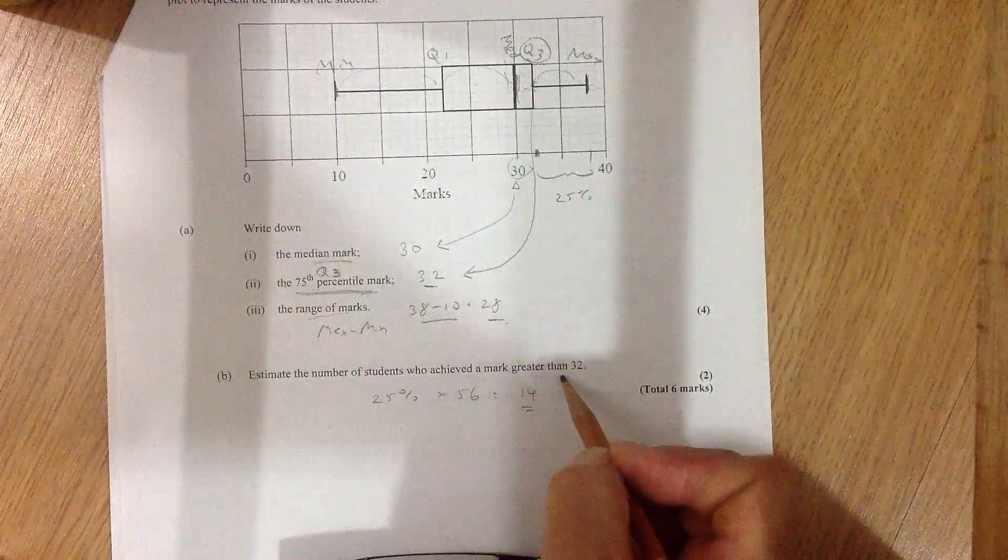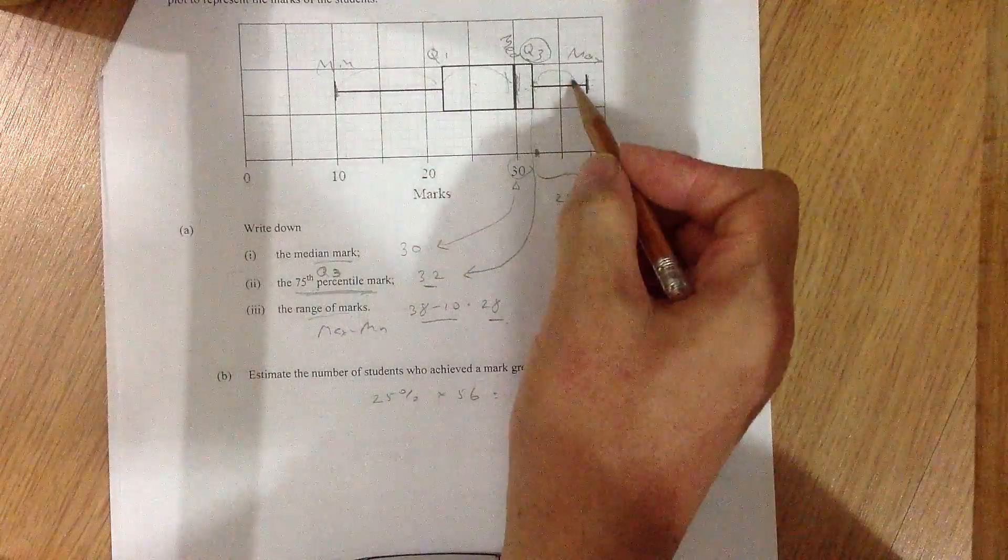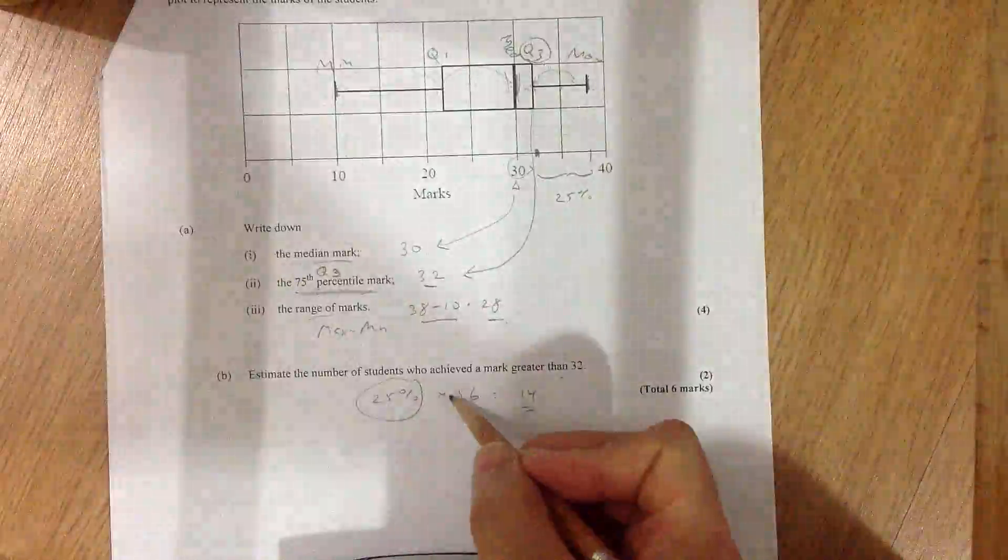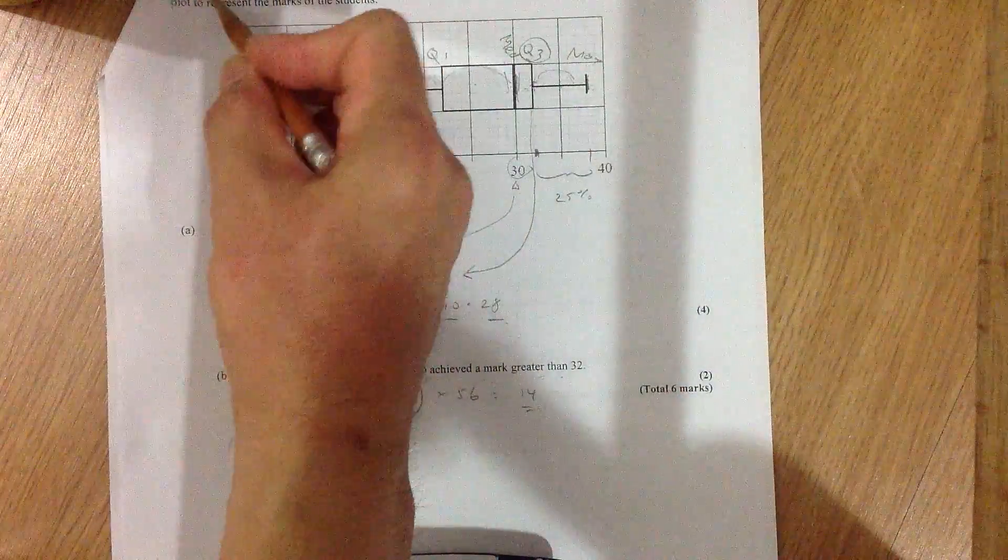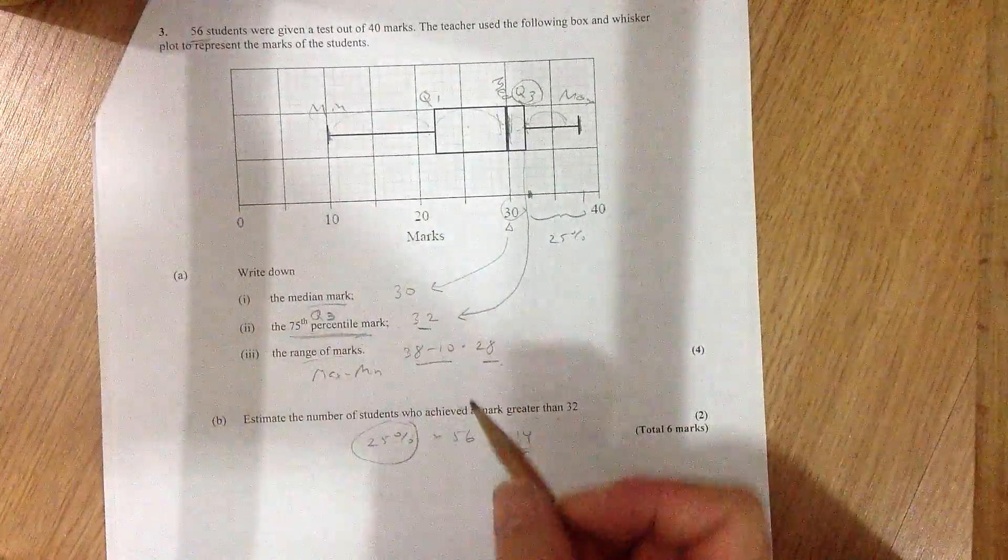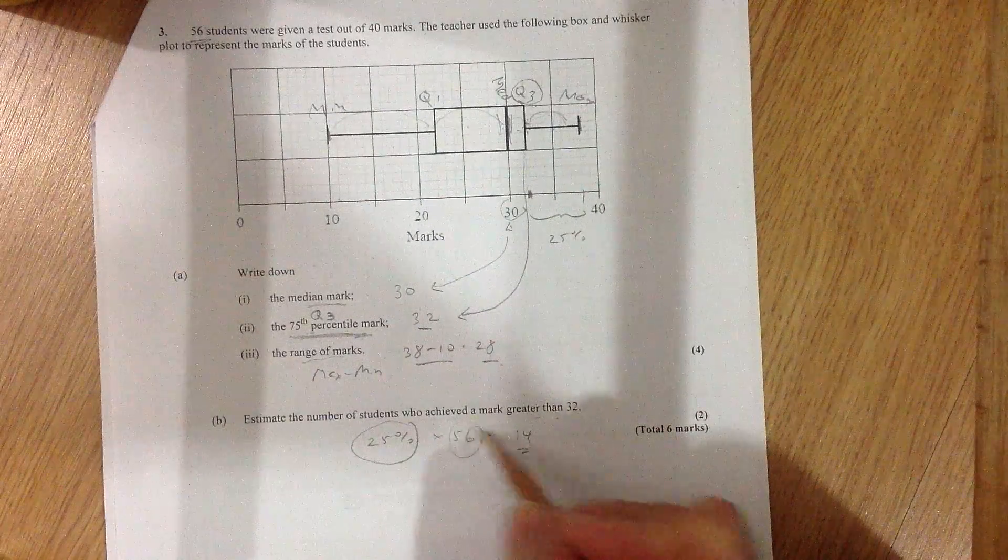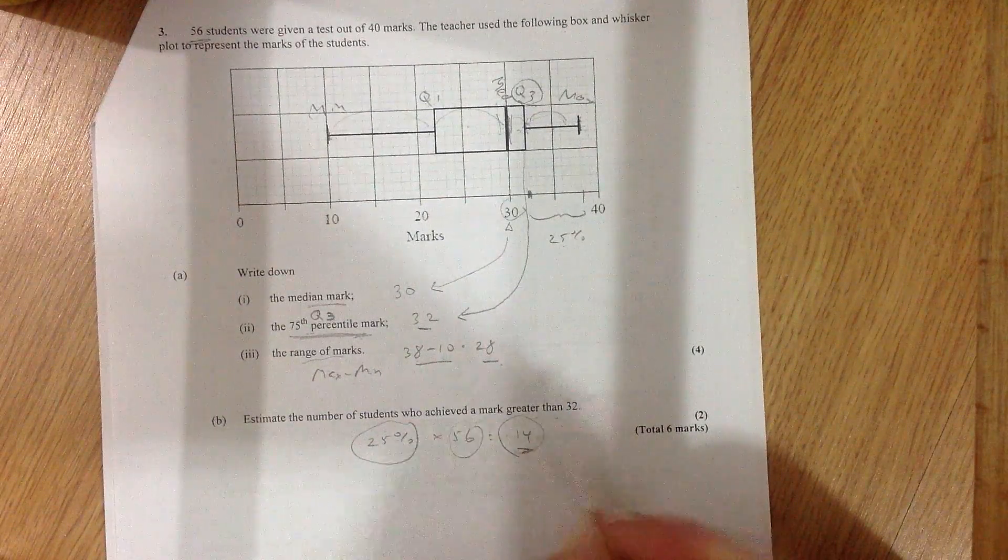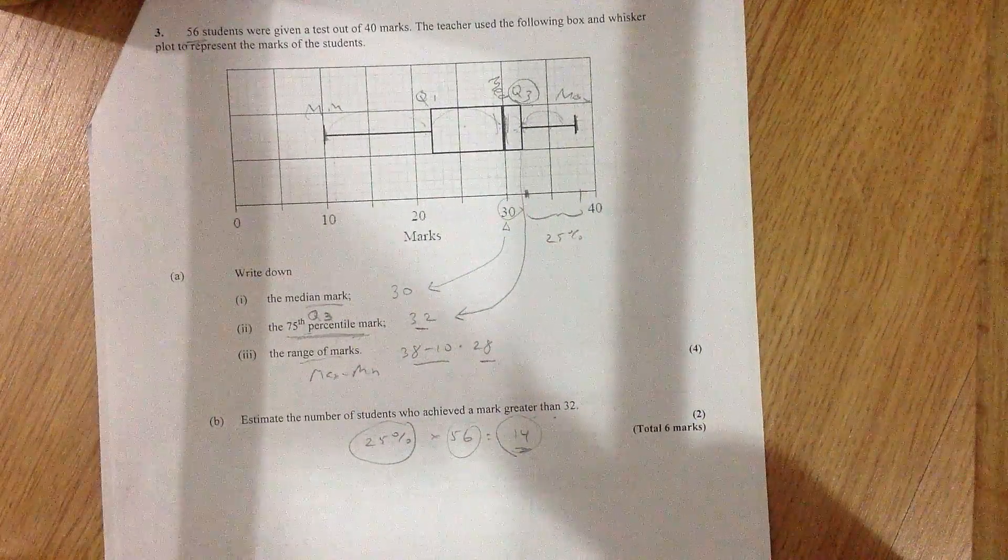So, estimate the number of students who achieved a mark greater than 32. Well, we know it's 25% of the people. So what's 25% of the total number of students? The total number of students is 56. So 25% times 56, and the answer is 14. So that wasn't too hard either.